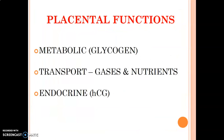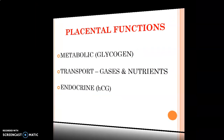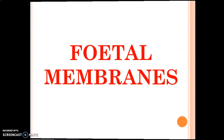The placenta has a metabolic role: it carries out glycogen metabolism and is able to transport gases and nutrients. It also has an endocrine role, producing hormones such as human chorionic gonadotropin hormones.